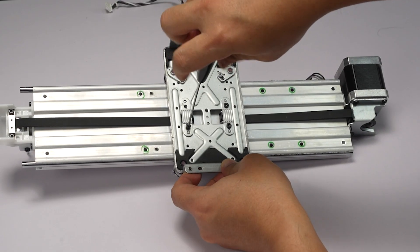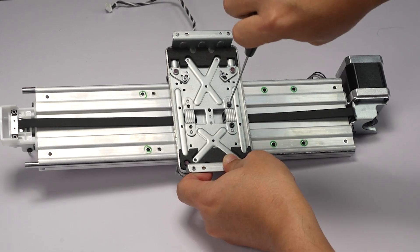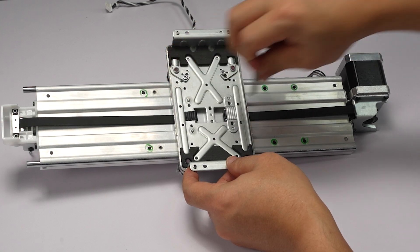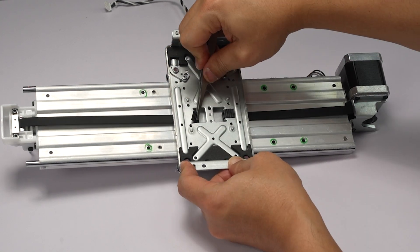Remove four screws. Remove the belt fixing plates and remove the Y belt.